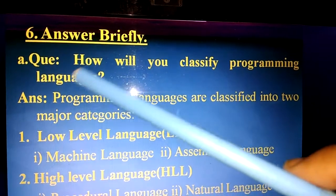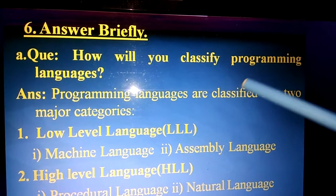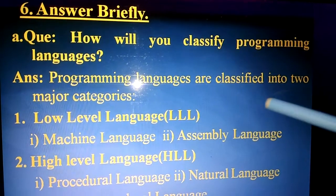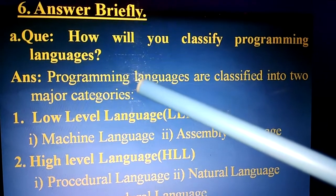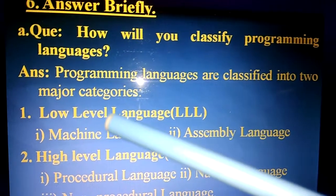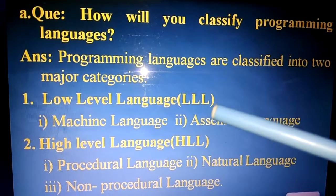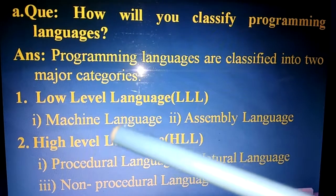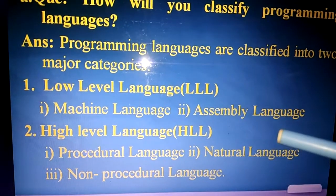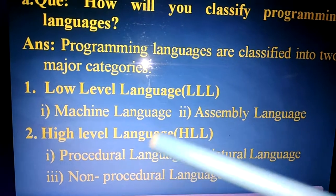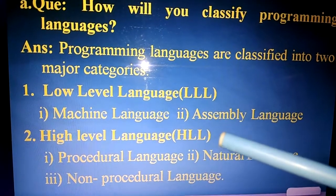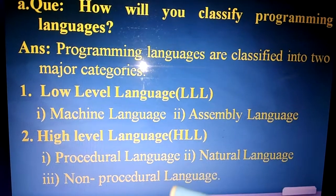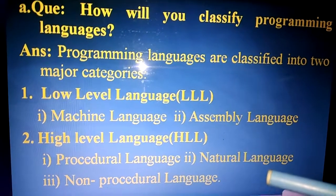Now exercise number six, answer briefly. Question A: how will you classify programming languages? Programming languages are classified into two major categories. Number one: low-level language (LLL), which includes machine language and assembly language. Number two: high-level language (HLL), which has three parts — procedural language, non-procedural language, and natural language.